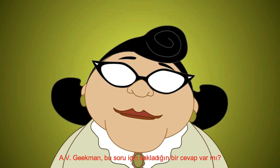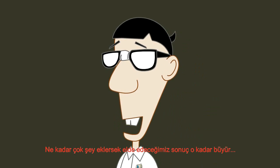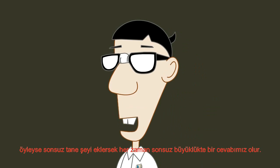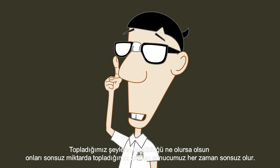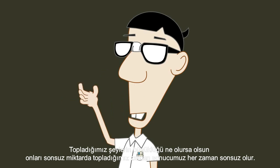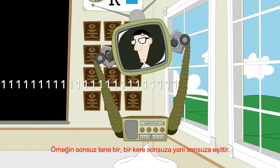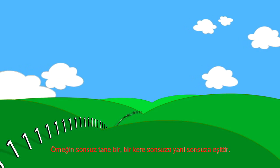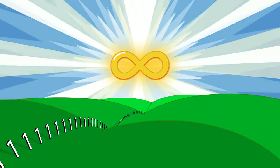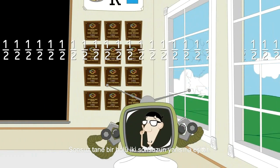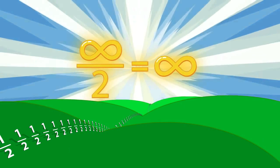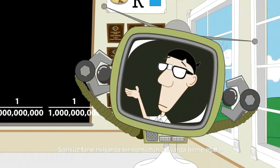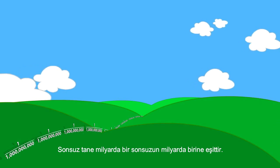A.V. Geekman, do you have an answer? Well, the more things you add up, the bigger the answer gets. So if you were to add up an infinite number of things, you would always get an infinitely large answer. No matter what size the things are, an infinite number of them will always be infinity. For example, an infinite number of ones is infinity times one, or infinity. An infinite number of one-halves is infinity times one-half. One-half of infinity is still infinity. Even an infinite number of one-hundredths is one-billionth of infinity, which is still infinity.